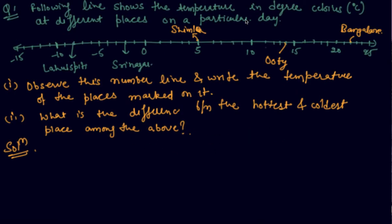So students, here is the question which states that the following line shows the temperature in degree Celsius at different places on a particular day. Let's say on a particular day, there is a temperature of 5 degrees Celsius in Shimla, and in Ooty it is 10, 11, 12, 13, and 14 degrees Celsius. And in Bangalore it will be 20, 21, 22.